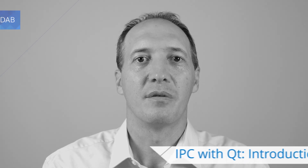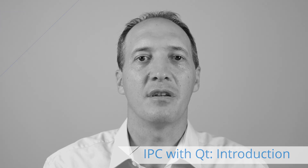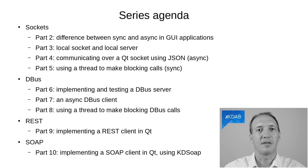I have chosen four different technologies to show you for interprocess communication. The first one will be sockets, then we'll talk about DBus, and then REST and SOAP.